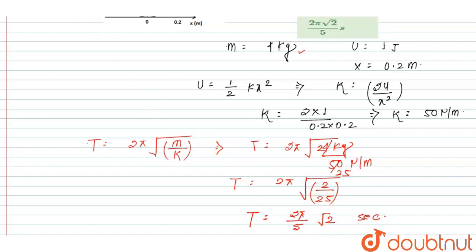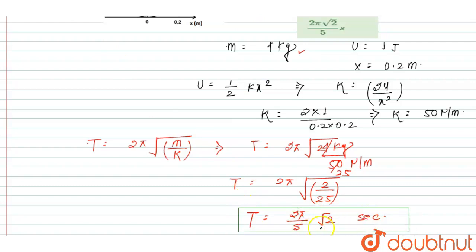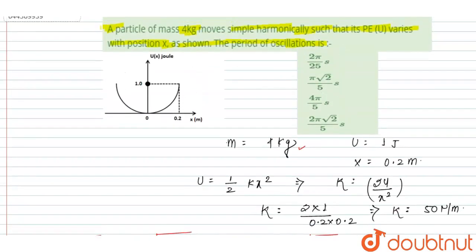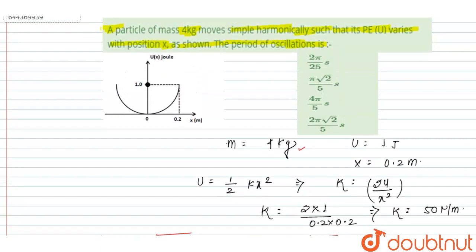This is the right answer of this question. Time period is equal to 2π upon 5 into root 2 seconds. Looking at the options, option 2π root 2 by 5 seconds — that means option D — is the right answer. Thank you.